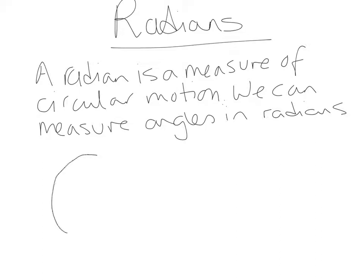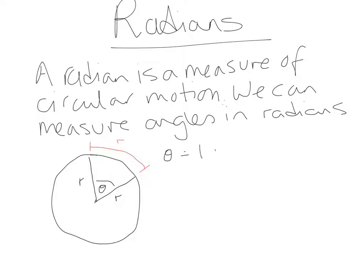So let's explain what a radian is. If we take a circle, and we move around the circumference of the circle in an arc — an arc is a movement round the circumference — if we move in an arc which is equal to the length of the radius, this would be another radius here. So this angle in here, theta, would be equal to one radian.